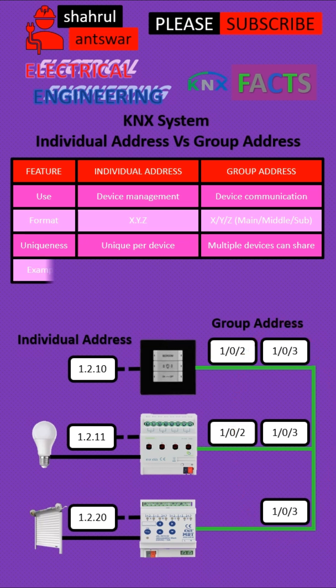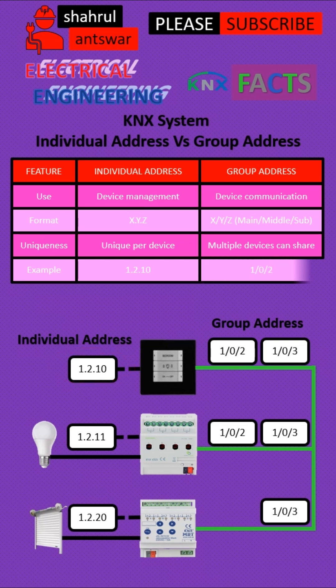Example: 1.2.10 is used for Individual Address, while 1.0.2 is used for Group Address.